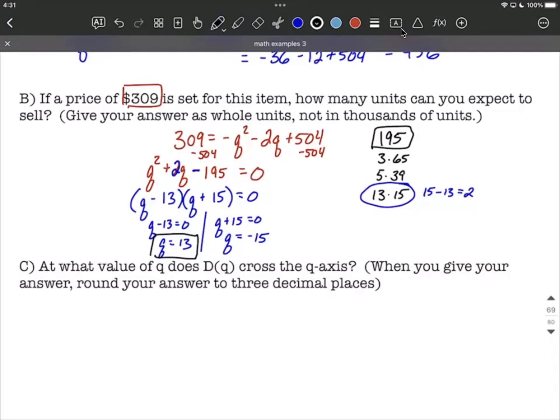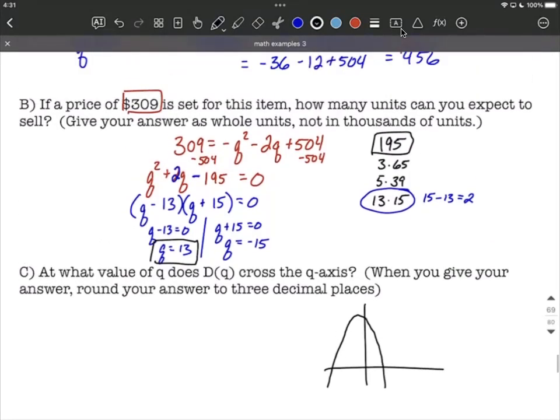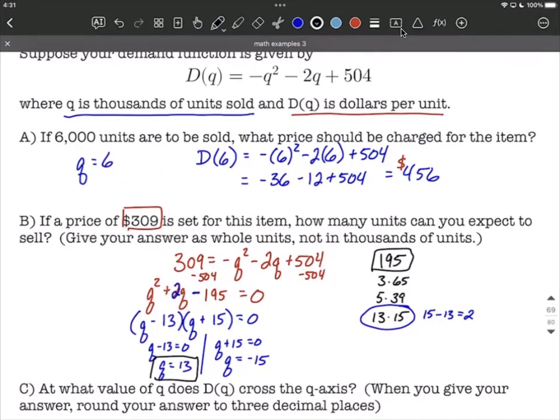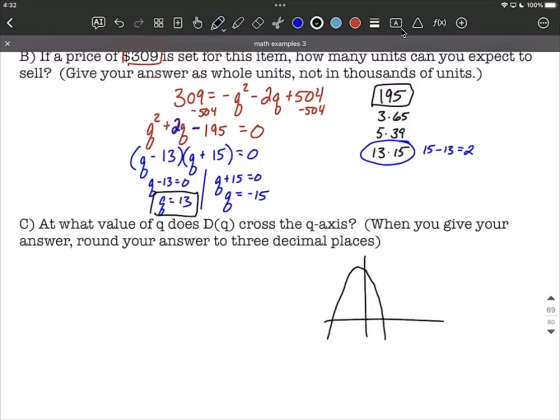Finally, let's look at part C. We want to figure out at what value of q does D(q) cross the q-axis? So when we're thinking about D(q) crossing the q-axis, that can be a little bit confusing. Our graph looks something along these lines. Looking back here, remember it was D(q) equals a negative quadratic. So it's a parabola that's been flipped upside down, moved up some number of units.